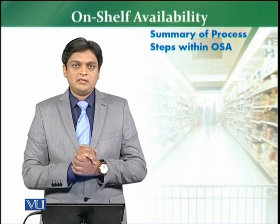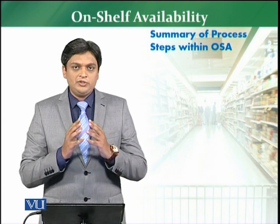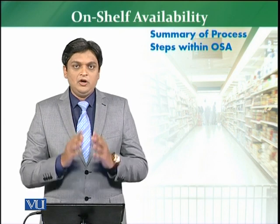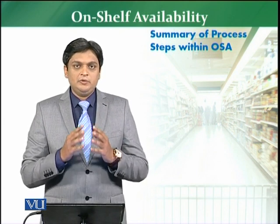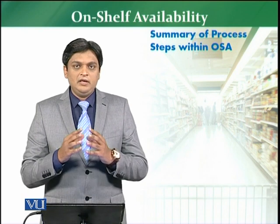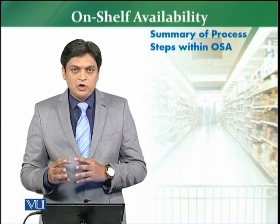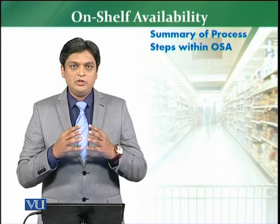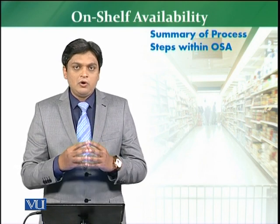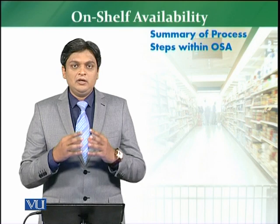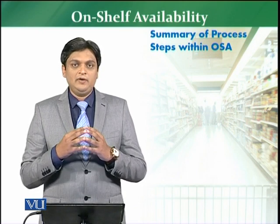Now we are going to discuss the complete summary of on-shelf availability — all four components which we have just discussed: the planogram, the gap check, the replenishment, and the root cause analysis. We are going to see how these will overall impact the business, specifically within the on-shelf availability parameter.